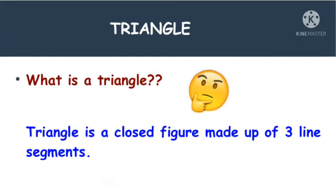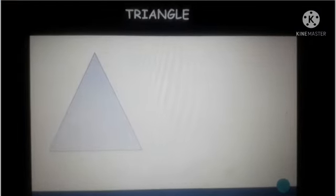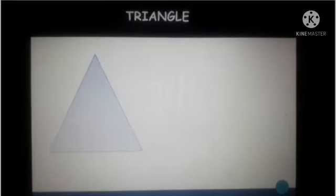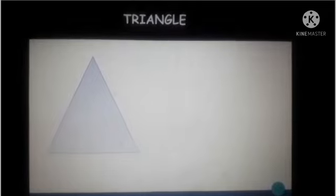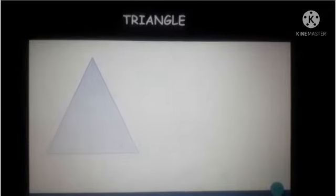What is a triangle? A triangle is a closed figure made up of three line segments. See here — this is a triangle, and this is a triangle.